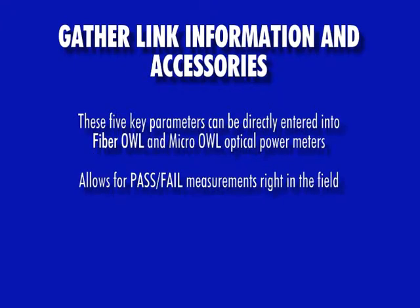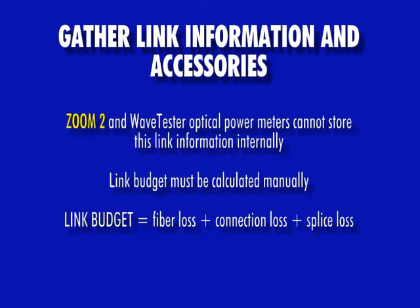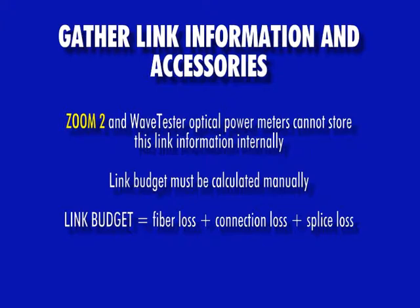When using a Micro OWL or Fiber OWL optical power meter, these parameters can be entered directly into the device to calculate the link budget. However, if the link budget needs to be calculated manually, this is done simply by adding together the fiber loss, connection loss, and splice loss. Fiber loss is given in dB per kilometer and varies based on fiber type and wavelength. To calculate fiber loss, multiply the fiber length in kilometers by the fiber loss.